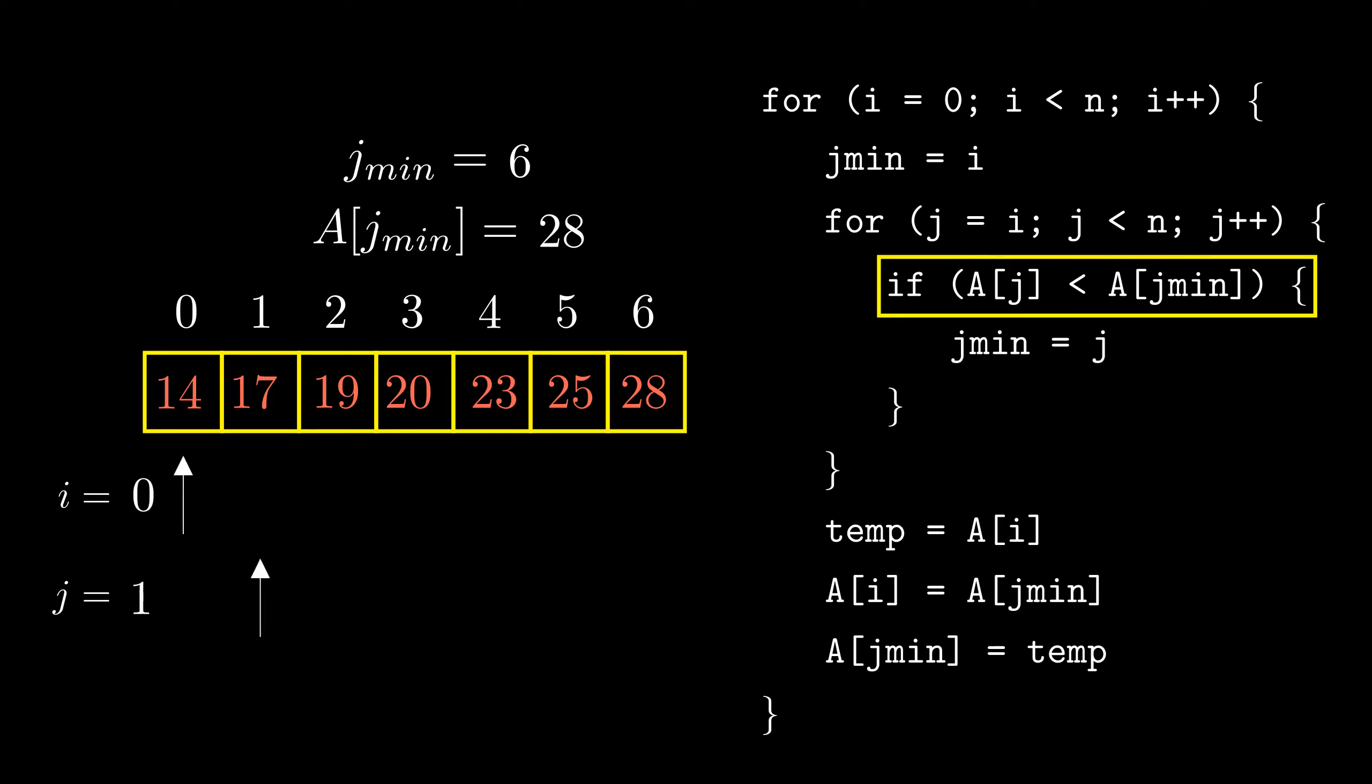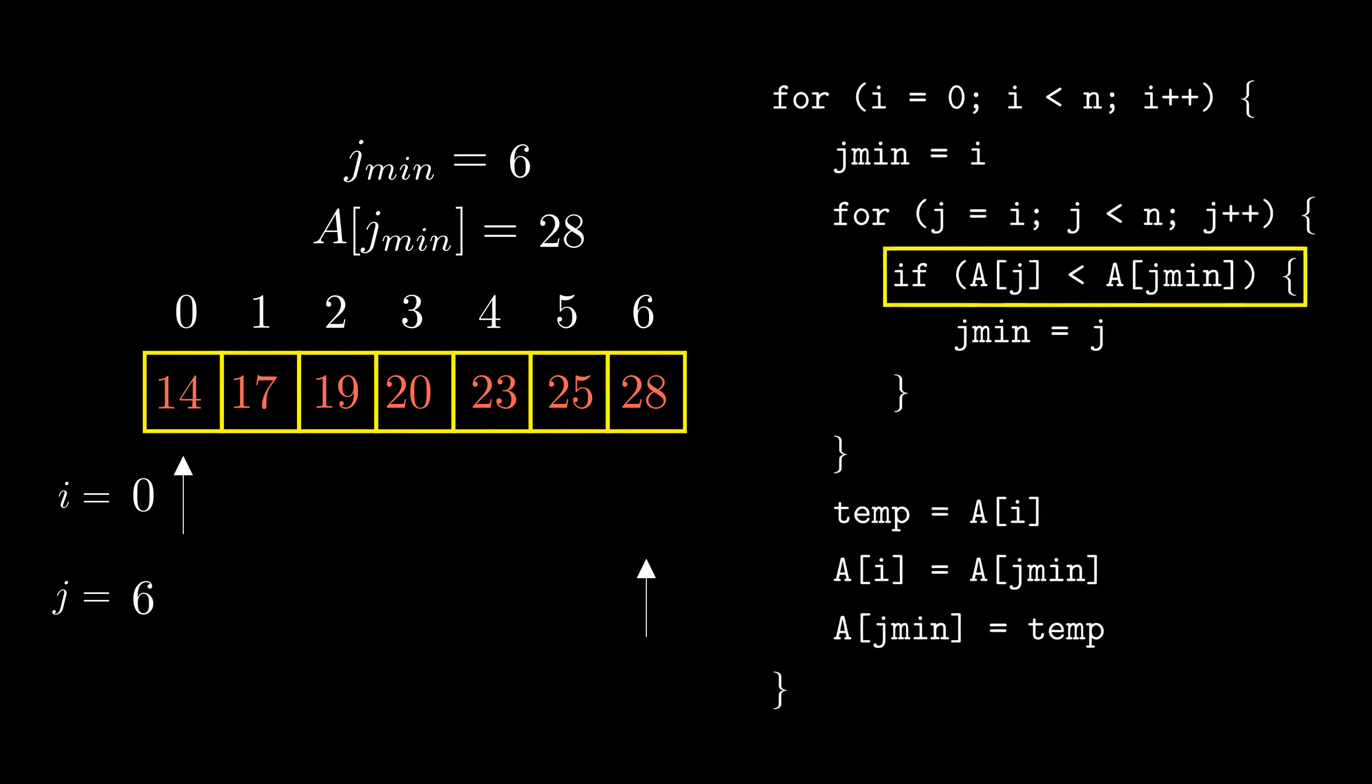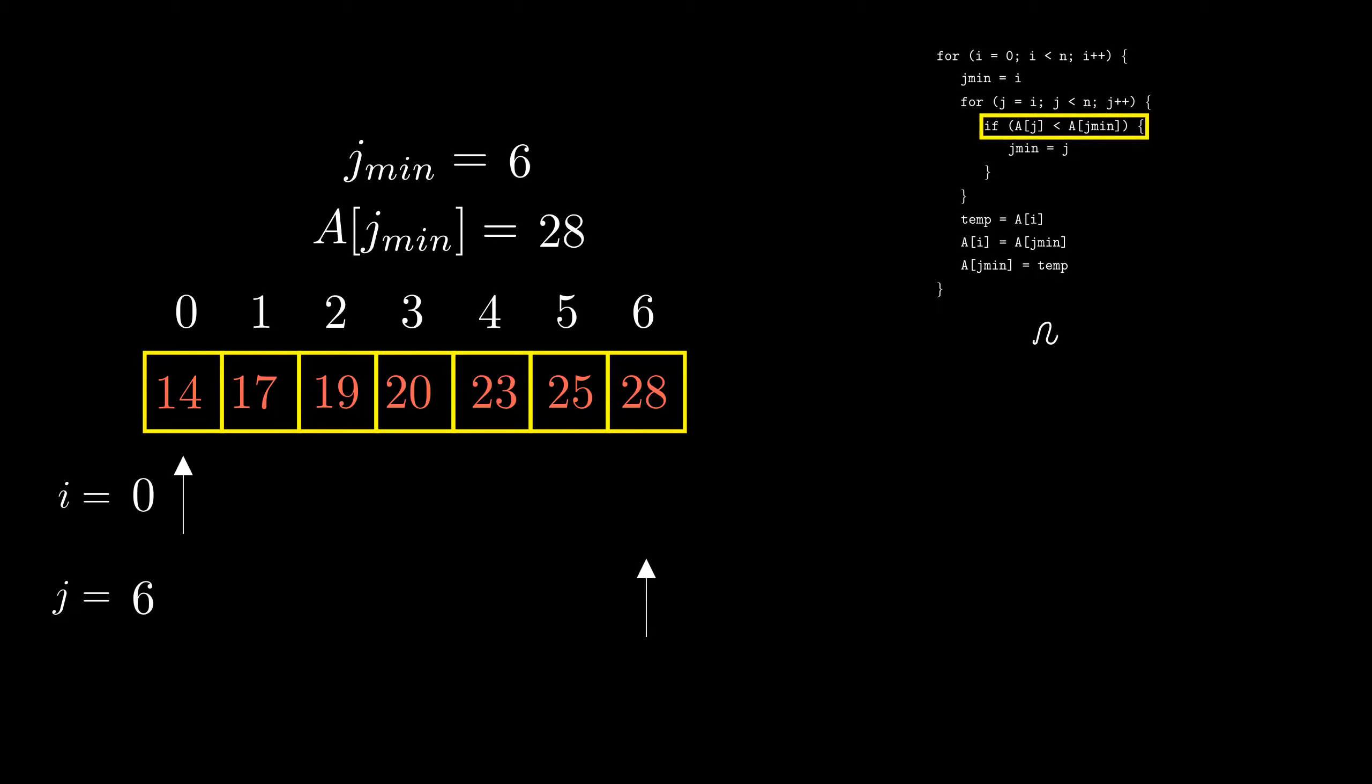Now for i equal to 0, j goes from 0 to n-1 so it takes a total of n values. So for i equal to 0, the if statement executes n times. For i equal to 1, j varies from 1 to n-1 giving rise to n-1 executions. We go on like this till we reach i equal to n-1 when there is just one execution of the if statement.